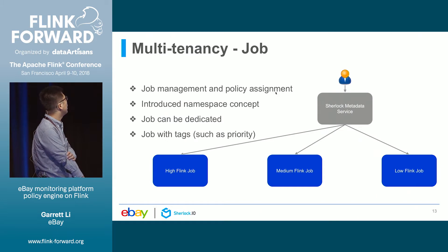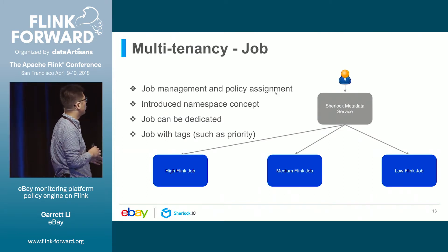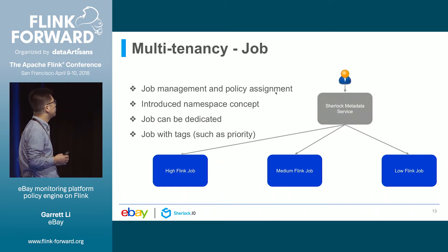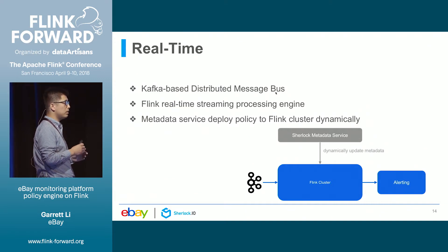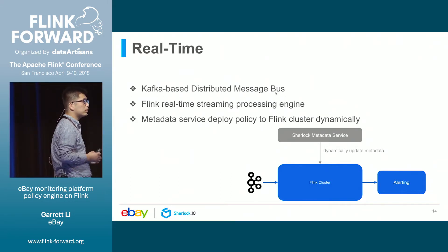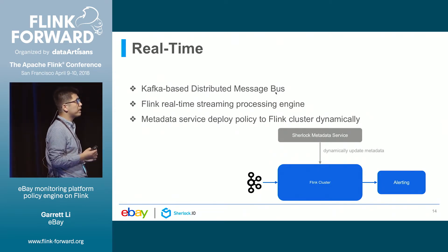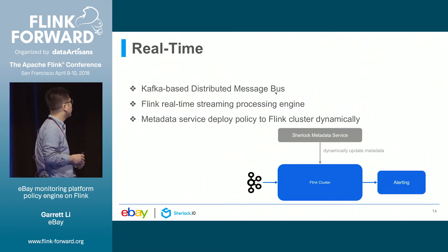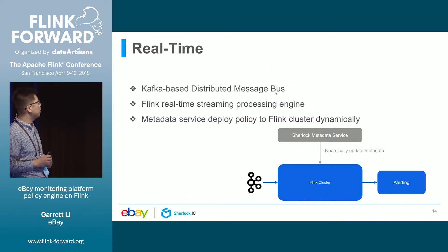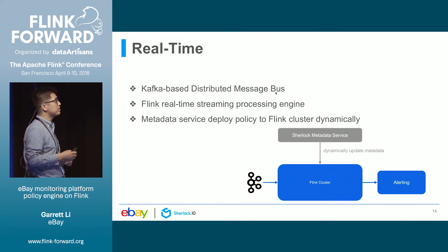Next, let's talk about how we implement real-time processing. In the policy engine, both the control plane and the data plane are real-time. For the control plane, our metadata service can deploy policies to the Flink cluster dynamically — policy changes are persisted to ZooKeeper, and then the Flink adapter receives the notification event and makes an IPC call to the metadata service to get the corresponding metadata and apply it in the Flink job. For the data plane, we introduced a Kafka-based distributed message bus along with the Flink real-time stream processing engine, so we are able to process messages in sub-seconds.